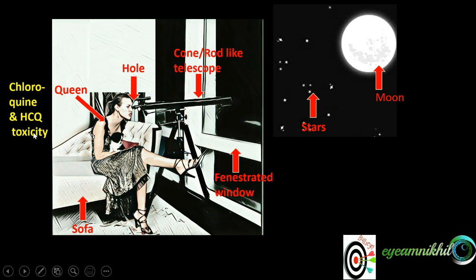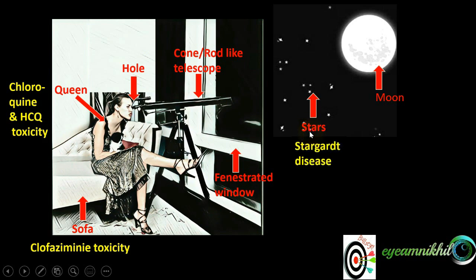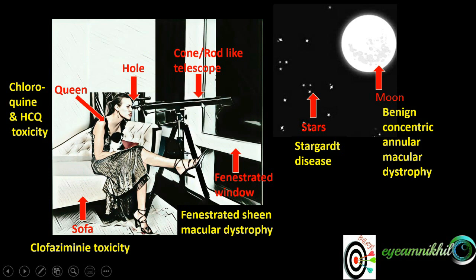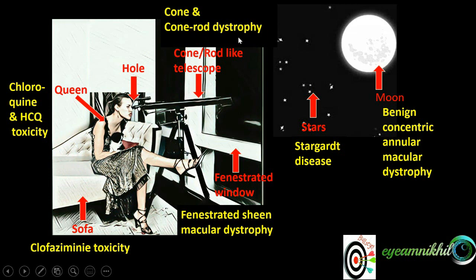Queen stands for chloroquine or hydroxychloroquine toxicity; sofa for clofazamine toxicity; stars for Stargardt disease; moon is a concentric annular structure, so it stands for benign concentric annular macular dystrophy; fenestrated window for fenestrated sheen macular dystrophy; cone or rod-like telescope for cone and cone-rod dystrophy; and hole for chronic macular hole.